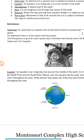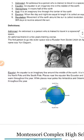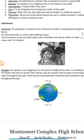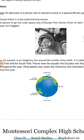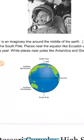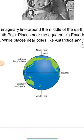The equator is an imaginary line around the middle of the earth. You can see here the equator going around the earth — not through the earth. And you can see here the axis going through the earth from pole to pole.